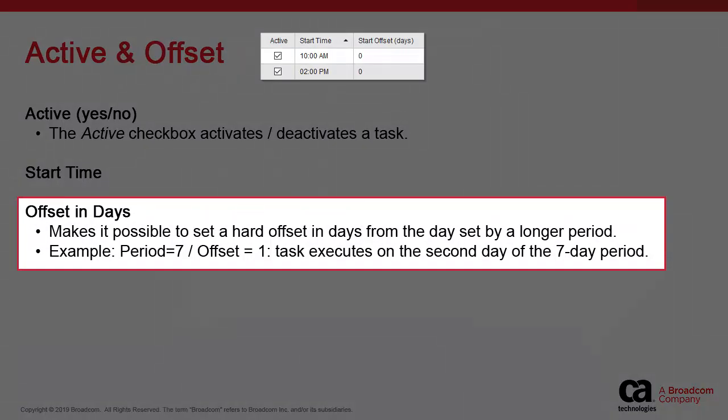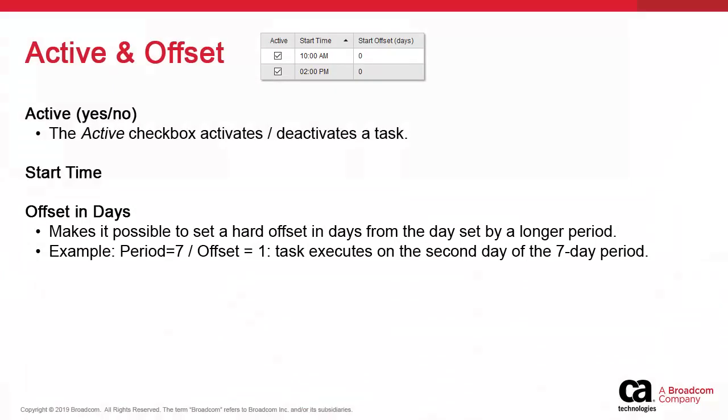The offset in days allows you to offset the execution of a particular task. Say your schedule object contains 20 tasks, all with similar automation requirements and a long period of say 7 days, but one task is an exception — instead of executing on the first day of that period, it needs to execute on the second day. You can set an offset here. Use caution: this function may interfere with calendar conditions, which are going to be explained next.